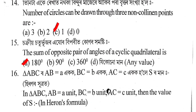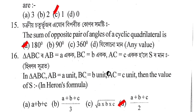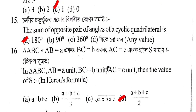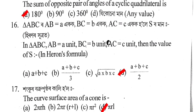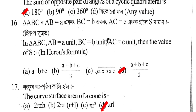Next question: The sum of opposite pairs of angles of a cyclic quadrilateral is? The correct answer is Option A: 180 degrees.